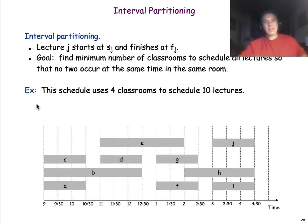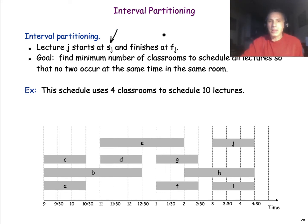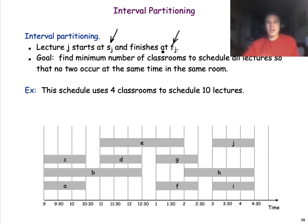The idea is that you have a number of jobs with a given start time and finish time, but now you don't have only one resource or one machine — you have as many as you want. You can accept all of these jobs, but the question is what is the minimum number of resources that you will need.